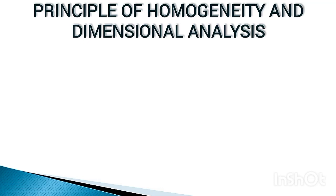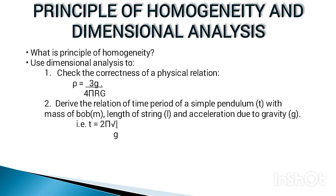Hello everyone. Today our topic is the Principle of Dimensional Homogeneity and Dimensional Analysis. We are discussing what the principle of homogeneity is, and we are going to use dimensional analysis to check the correctness of the physical relation ρ = 3g/(4πrG), and derive the relation for the time period of a simple pendulum — T = 2π√(l/g) — using dimensional analysis. So let's get started.